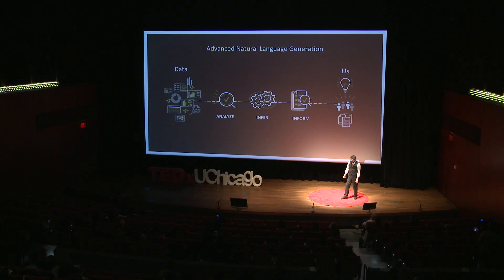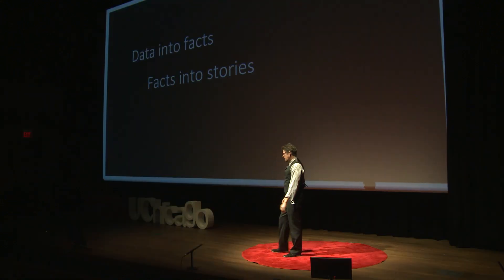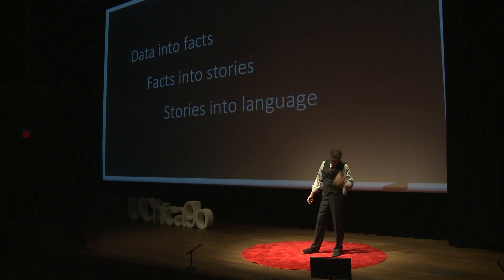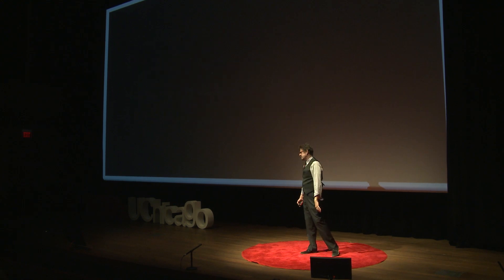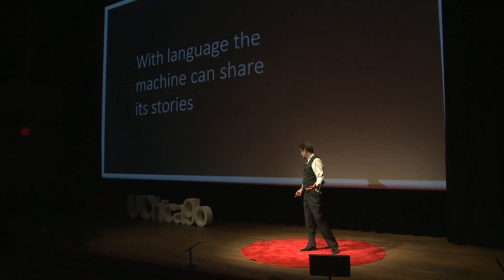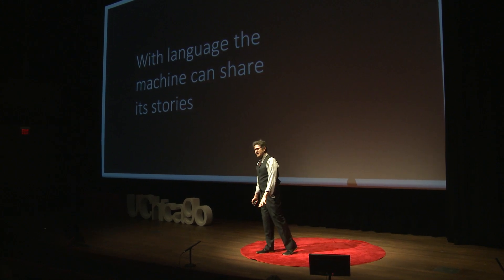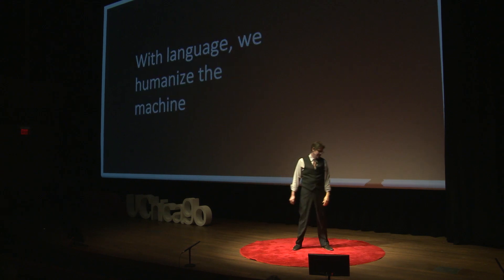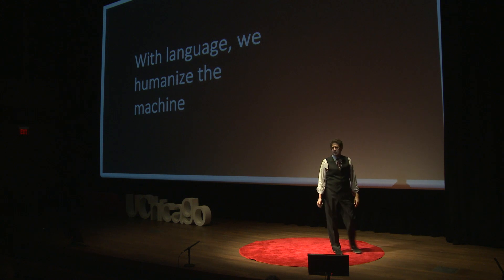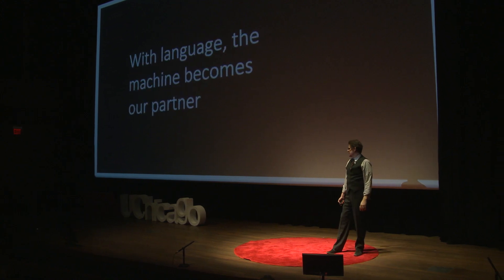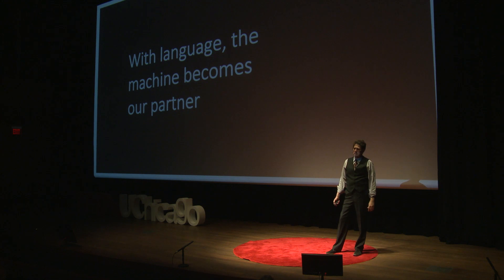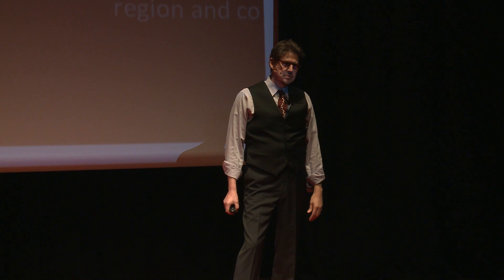So it's really all about this notion of analyze, infer, and inform — moving data to facts, facts into stories, stories into language. And it's this language capability that will allow the machine to take everything it knows and tell us about it, to share its stories. It's how we can humanize the machine. And in reality, it's how we can turn the machine into a partner. And that's what Quill does. Thank you.